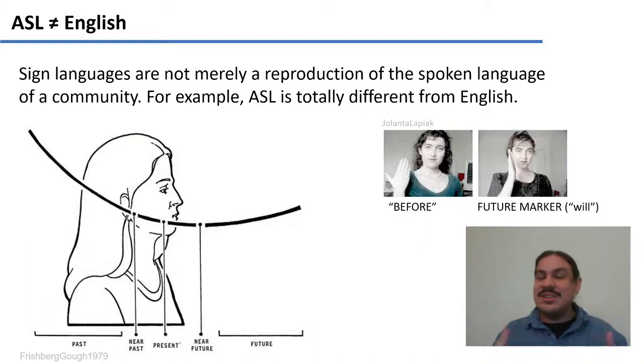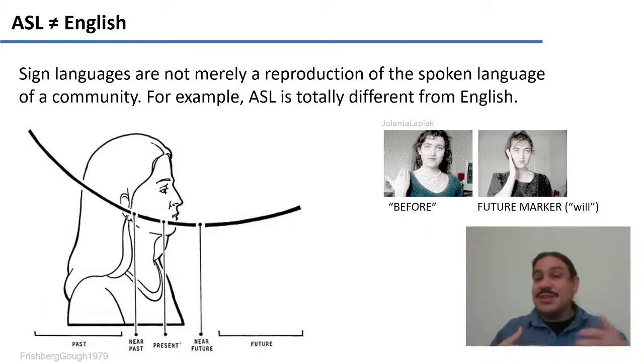So both languages use morphemes attached to roots to express time, but they use them very differently. ASL is not English — it is a full language on its own.